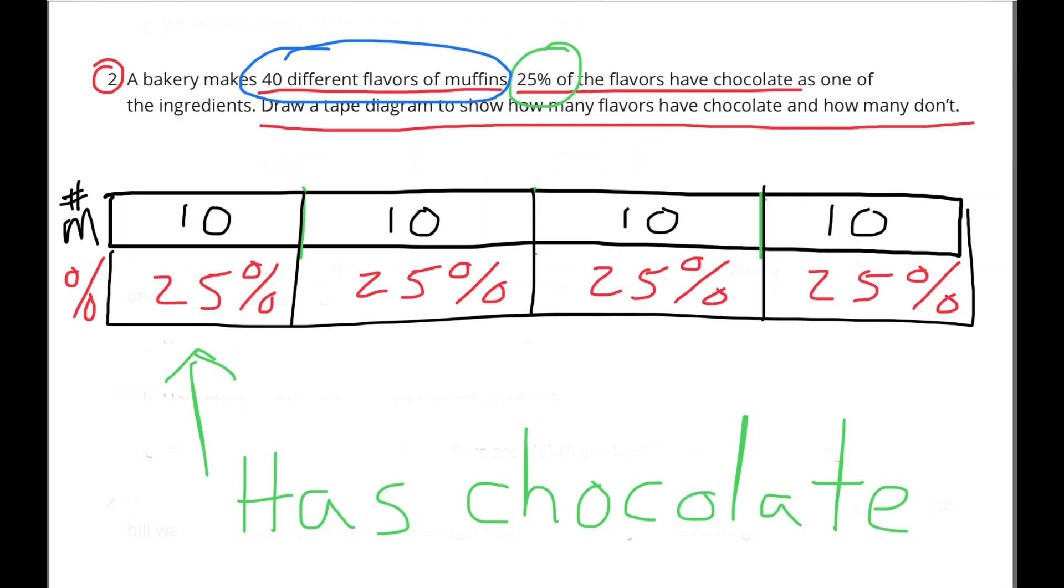10 flavors, or 25% of the muffins, have chocolate in their ingredients. And 30 flavors, or 75% of the muffins, don't.